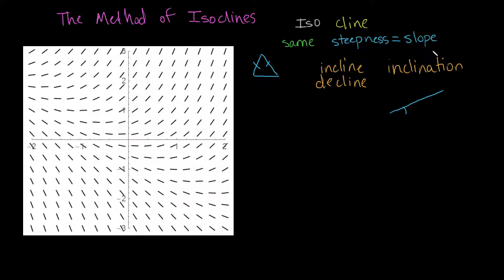So the method of isoclines can be rewritten as the method of same slopes. Now we have this in English — but what does this mean? Why would we want to have the method of same slopes?